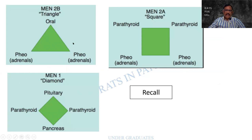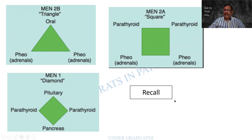Using a visual mnemonic: a triangle represents the oral cavity, and the adrenal and contralateral adrenal can both be affected in MEN2b. A diamond shape represents two parathyroids affected. The pituitary is on top and pancreas below in a square shape. Two parathyroids, two pheochromocytomas — a helpful mnemonic design to recall the components.